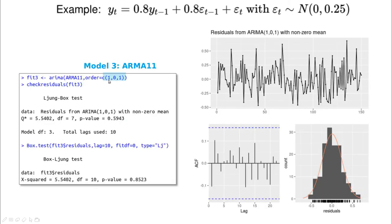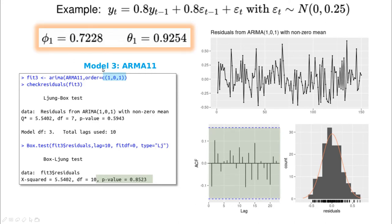So next, let's include both — the autoregressive part and the moving average part. This ARMA(1,1) model should be better. When you check the residuals of this fit, the autocorrelation function is completely uncorrelated and the residuals look pretty normal. I would say this model is completely identified. The p-value is now well above 0.05, meaning all correlations for different lags are between the blue dashed lines. The estimated parameters aren't exactly 0.8, but we need to account for the fact that we're shrinking the parameters slightly to bring them closer to the original ones.